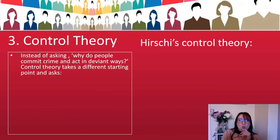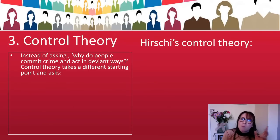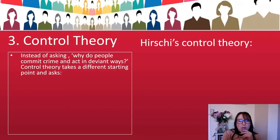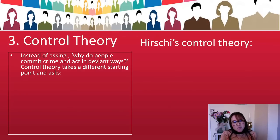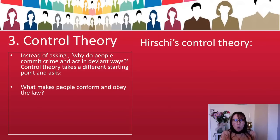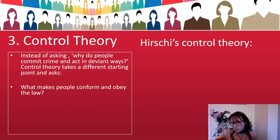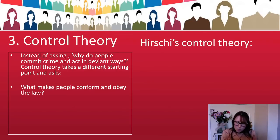The final section is control theory. I don't think control theory says anything particularly different from what we've already said, but it's a key name and a key argument — get your marks. Instead of asking why people commit crimes, control theory asks what makes us conform and obey the laws in the first place — it flips it on its head. Once you understand why people abide by the rules and laws, you can understand why they've broken them and how to get them back on track.